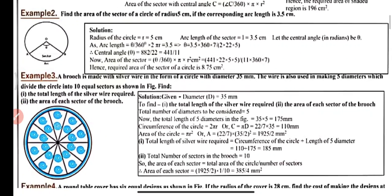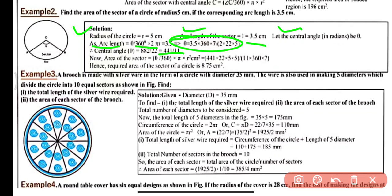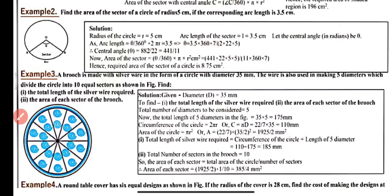Example 2: A circle with center O has radius r = 5 cm and arc length = 3.5 cm. Let the central angle be θ. Using length of arc = (θ/360) × 2πr, we find θ = 441/11 degrees. Area of sector = (θ/360) × πr². Substituting all values, area of sector = 8.75 cm².